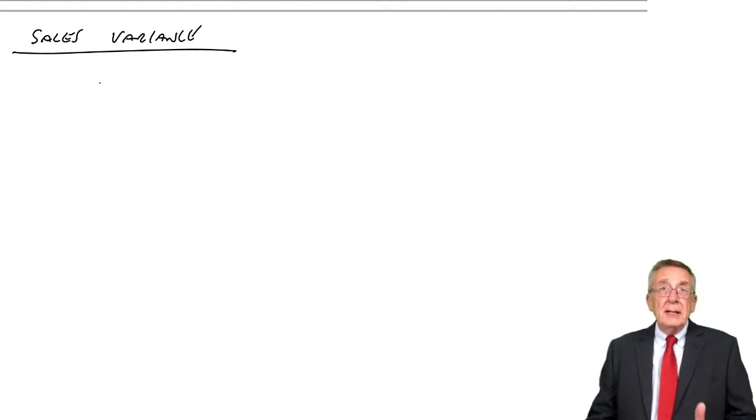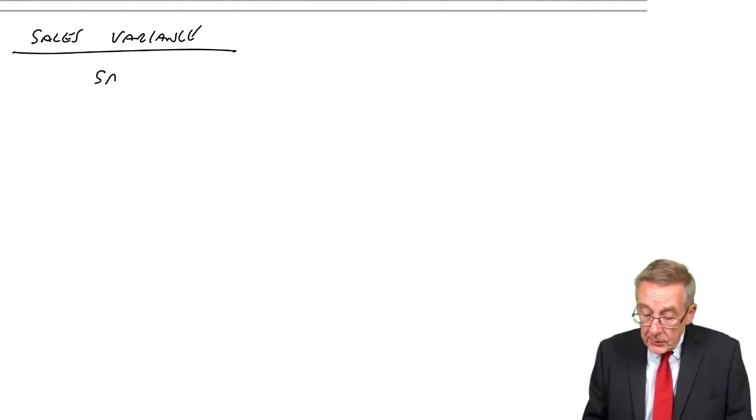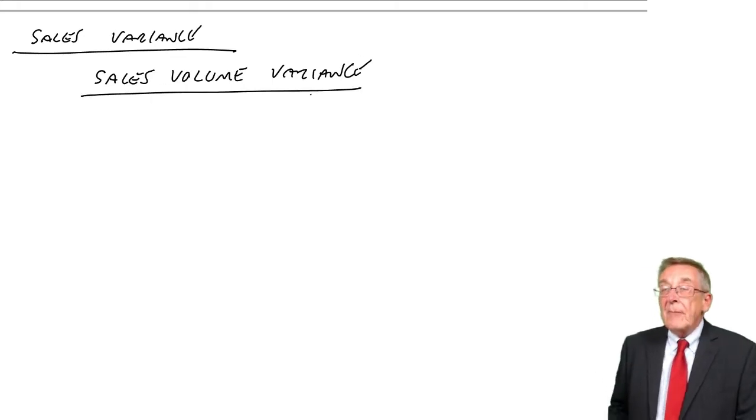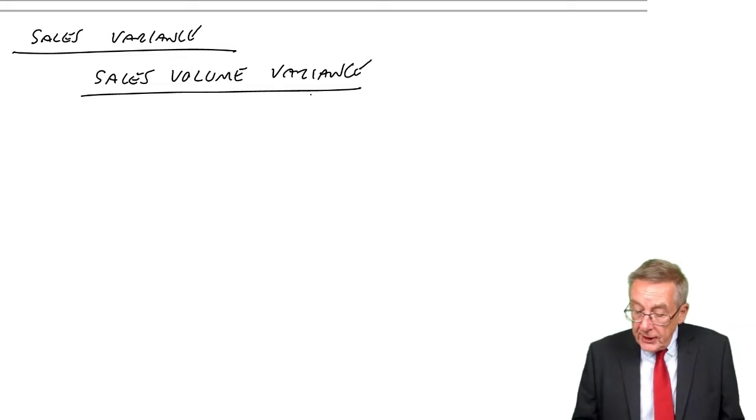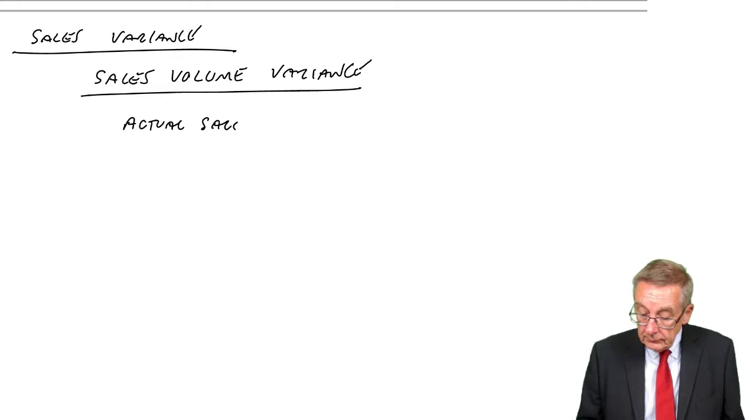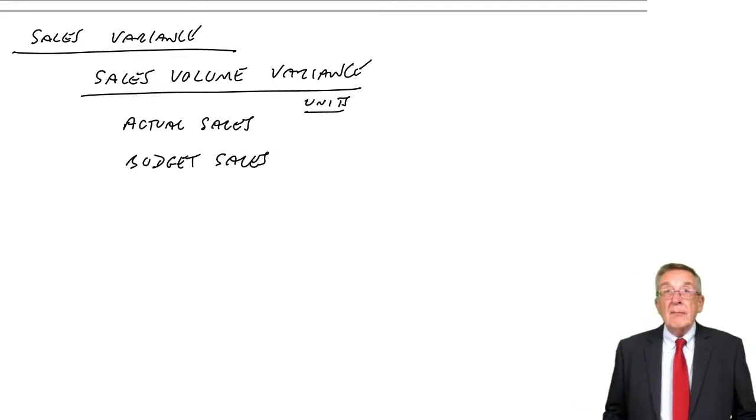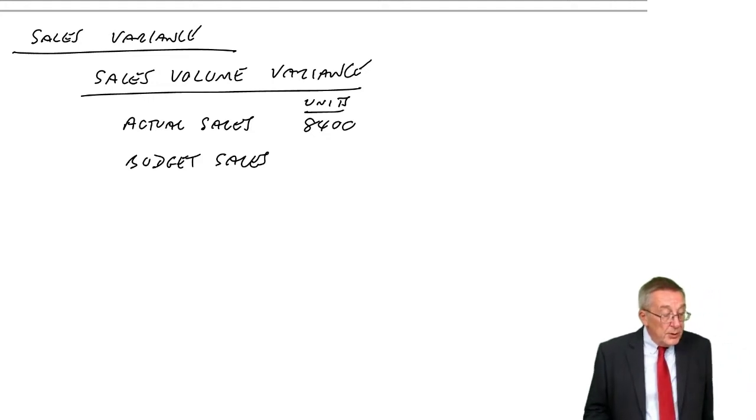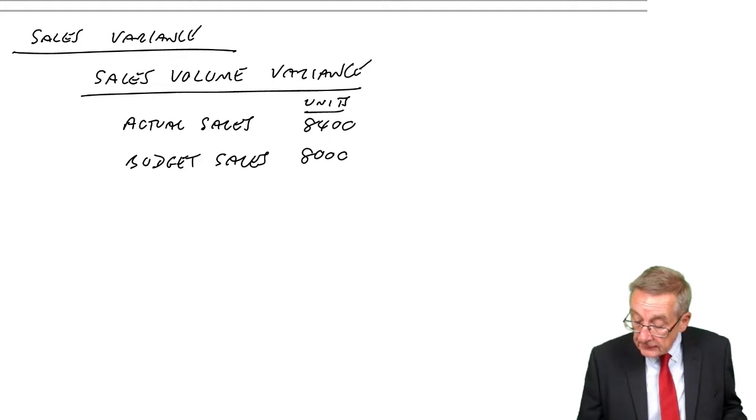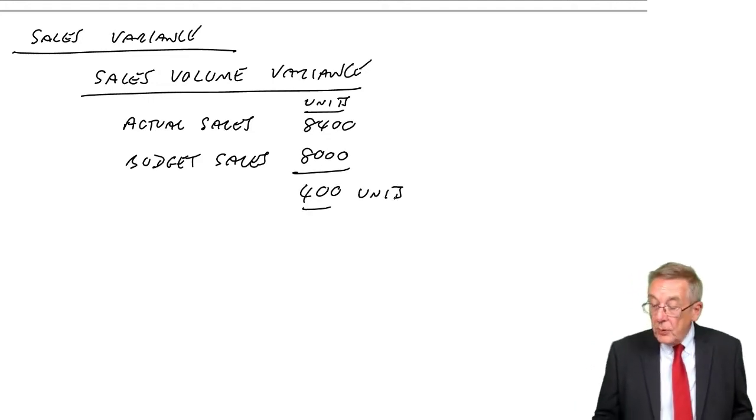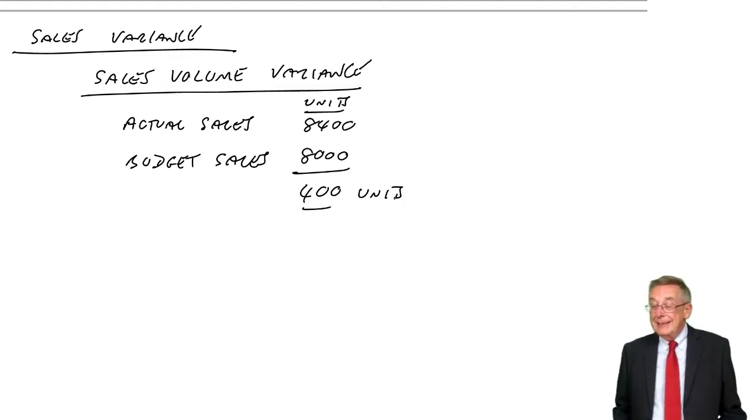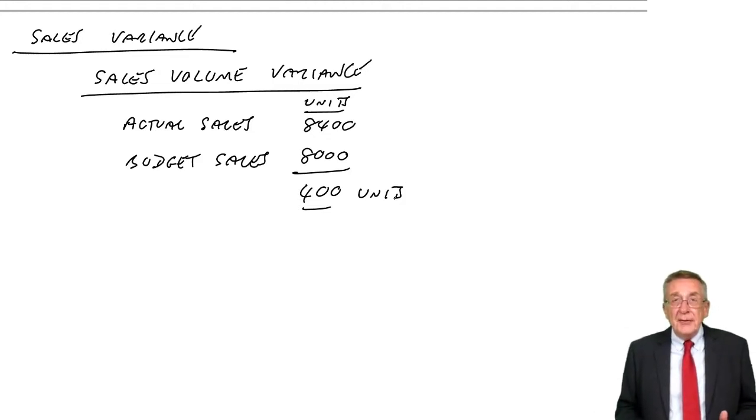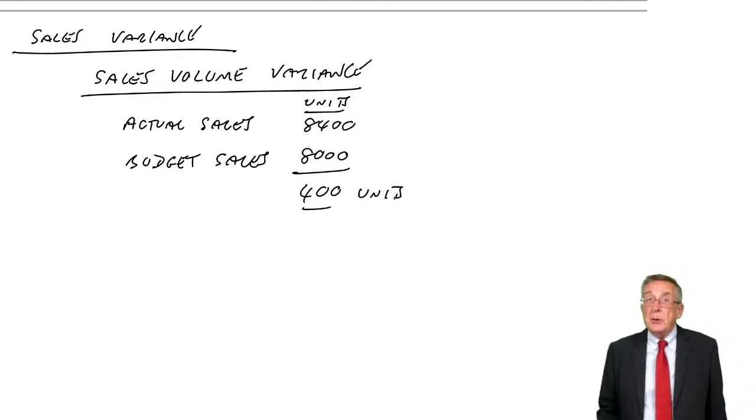First of all, let's look at the effect of selling more or less than we budgeted. That's known as the sales volume variance. And to check here, we compare how many units we actually sell with how many units we budgeted on selling. Well, how many units did we sell? We sold 8,400. How many units had we budgeted on selling? 8,000.